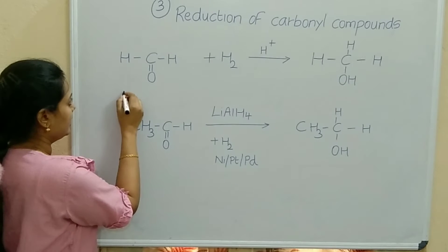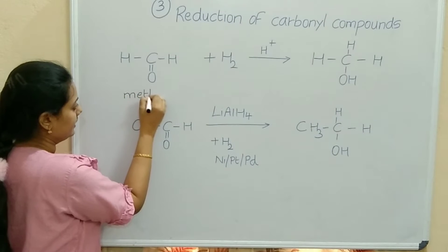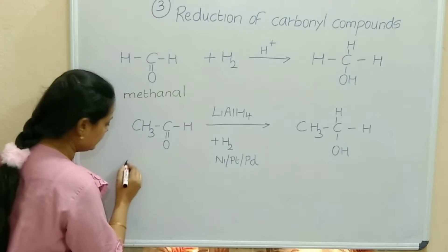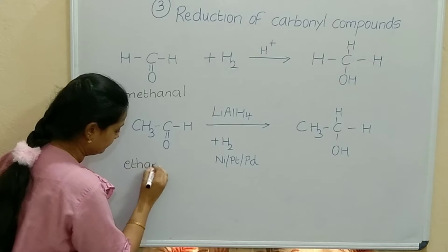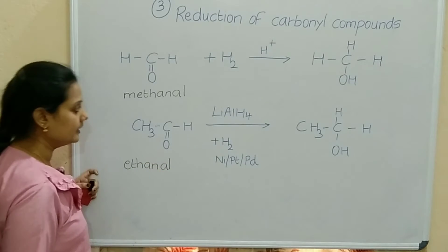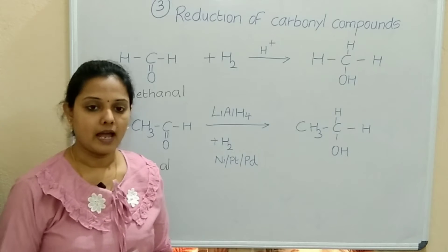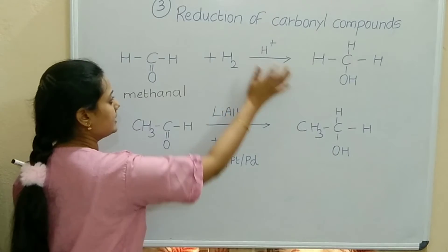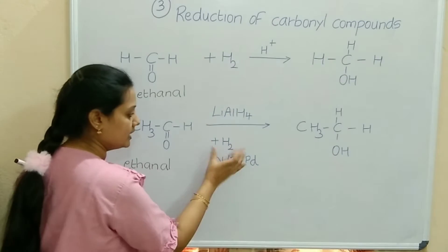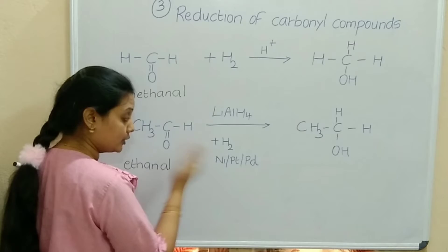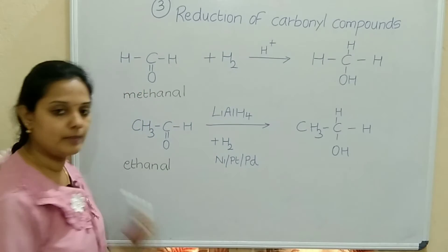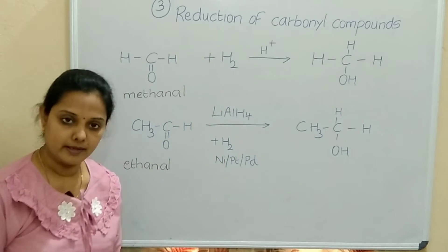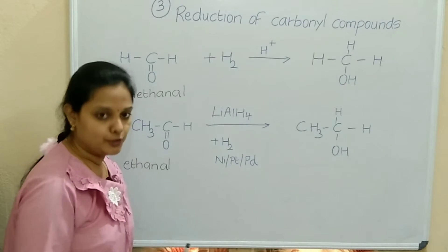For aldehydes: the first example is methanal, which has only one carbon. CH3CHO is acetaldehyde or ethanal. Reduction means addition of H2 — hydrogenation — which takes place in the presence of a catalyst such as nickel, platinum, or palladium, or it can happen in the presence of lithium aluminium hydride.